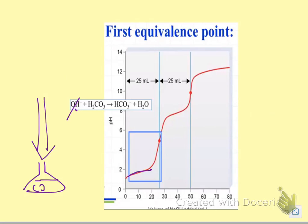And here's my buffer region, where as I add base, it's going away immediately, causing this reaction. I end up with the weak acid and its conjugate base, so I'm in this buffer region. Eventually, I reach this point where I have an equal number of moles of the hydroxide and the carbonic acid. And that's my equivalence point.